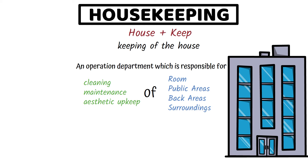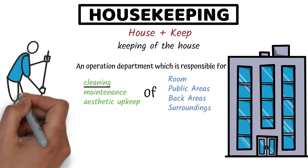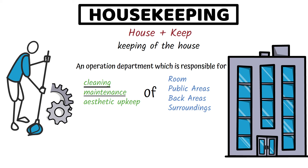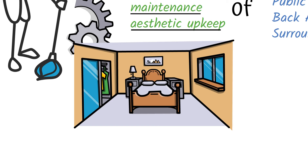Let's break this definition into parts for easy understanding. Cleaning means removing foreign or unwanted substances such as dirt, dust, or any other infectious agents or impurities from an object or environment. Maintenance refers to all actions taken to prevent equipment or a facility from failing and keeping them in good working condition. Housekeeping will report to the engineering and maintenance department for any kind of failure or repair work related to plumbing, carpentry, or electrical work. Aesthetic upkeep means keeping everything in its place and in good condition so that it looks beautiful and attractive.